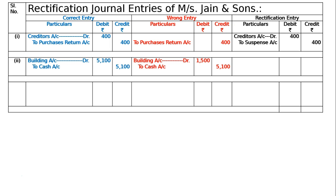Rs. 5100 spent on legal expenses for the newly acquired building was debited to the building account as 1,500. It should have been building to cash 5,100, but by mistake it was debited to building account as 1,500 and to cash account 5,100. Hence the difference of 5,100 minus 1,500 will be debited to building account to rectify the error — that is, building account debited 3,600 — and the rest goes to suspense account credit 3,600, being less amount posted to building account for legal expenses paid for a newly purchased building, now rectified.